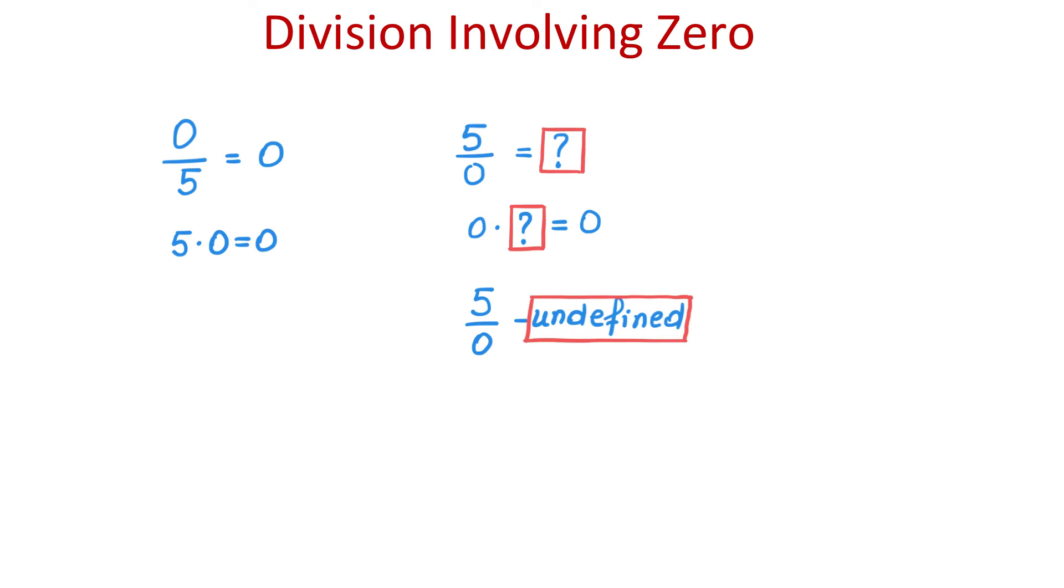Now what about dividing 0 by 0? So let it be an unknown number, and if we multiply 0 by this unknown number we should get 0. In this case, this can be any number because 0 times any number will be 0. So 0 times any number will be 0. Then we say that 0 divided by 0 is indeterminate.